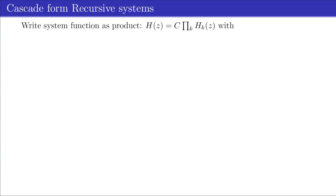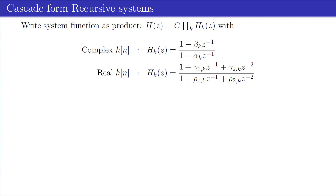The cascade structure is derived by factoring the numerator and denominator polynomials and using these factors to write the system function H as a product. The factorization corresponds to a cascade of first-order filters, each having one pole and one zero. In general, the coefficients alpha k and beta k will be complex. When the impulse response H is real, the roots occur in complex conjugate pairs, and these complex conjugate factors may be combined to form second-order factors with real coefficients.